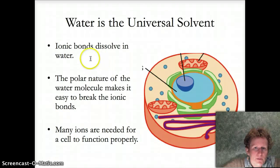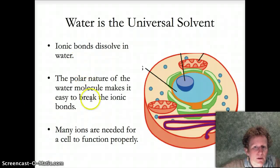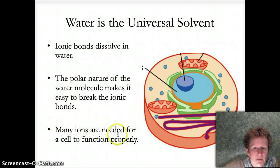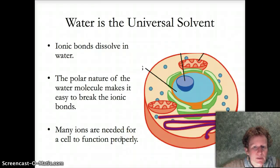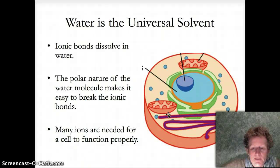Water is the universal solvent. Ionic bonds dissolve in water — we need those electrolytes. The polar nature of the water molecule makes it easy to break the ionic bonds that exist in electrolytes, the stuff you need if you're an athlete because you sweat a lot. Many ions are needed for a cell to function properly; it needs to maintain electric potential much like a battery. We need a watery environment to make those electrolytes work, so water is essential to cells.